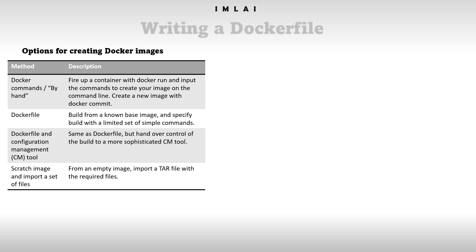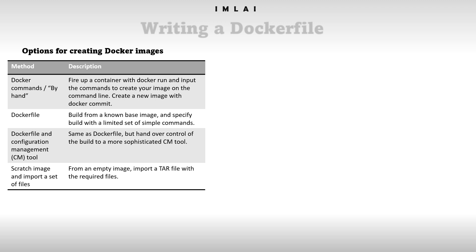What is a Dockerfile? A Dockerfile is a text file with a series of commands or instructions in it — that's it. That is what we call a Dockerfile. Now let's look into how one is written.